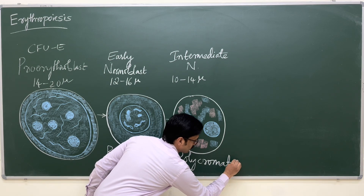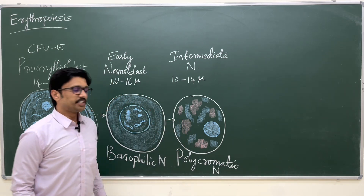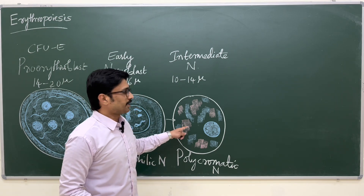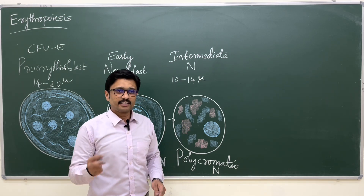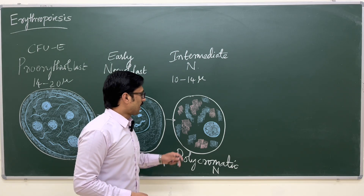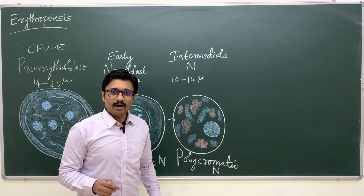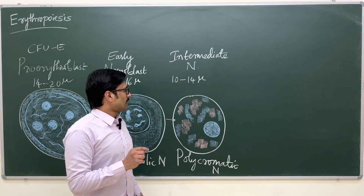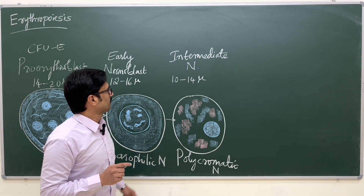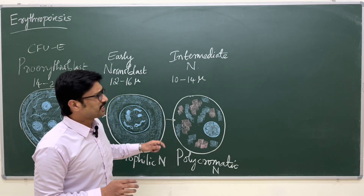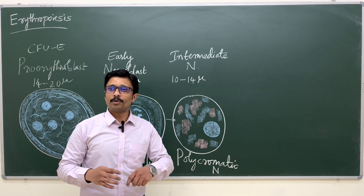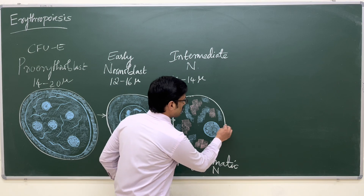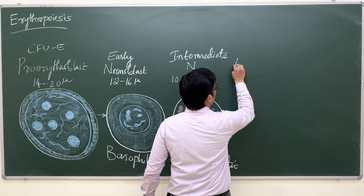Because the cytoplasm stains with both acidic and basic dye, the intermediate normoblast is also called the polychromatic normoblast. Hemoglobin synthesis starts within the intermediate normoblast, and these cells also retain the property of cell division.